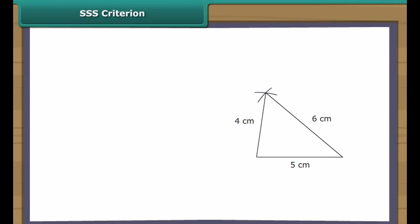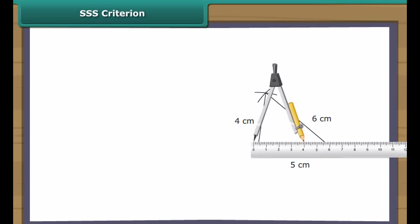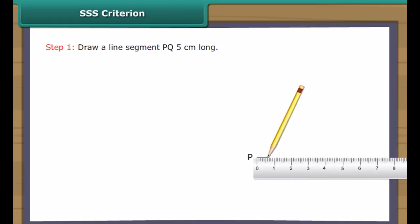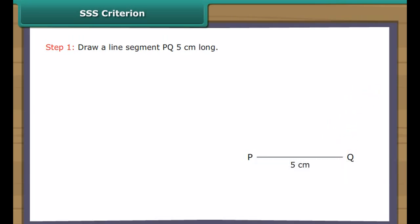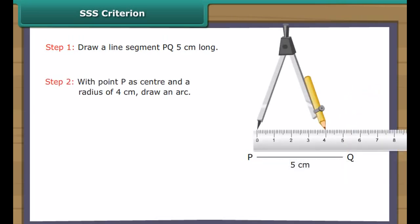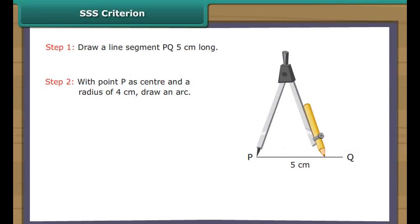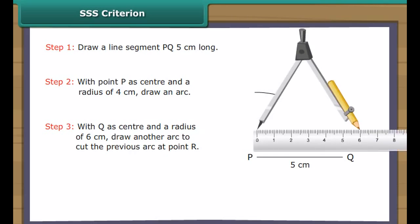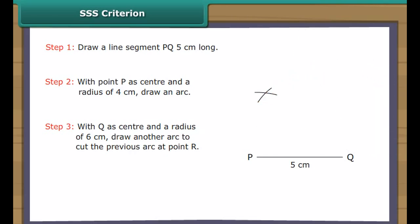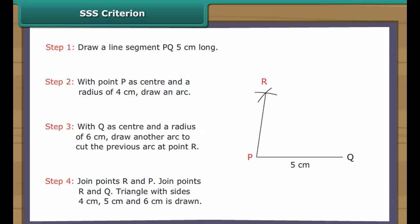SSS criterion. Let us draw a triangle whose three sides measure 4 cm, 5 cm, and 6 cm with the help of a ruler and a compass. Draw a line segment PQ 5 cm long. With point P as center and a radius of 4 cm, draw an arc. With Q as center and a radius of 6 cm, draw another arc to cut the previous arc at point R. Join points R and P, then join points R and Q. The triangle with sides 4 cm, 5 cm, and 6 cm is drawn.